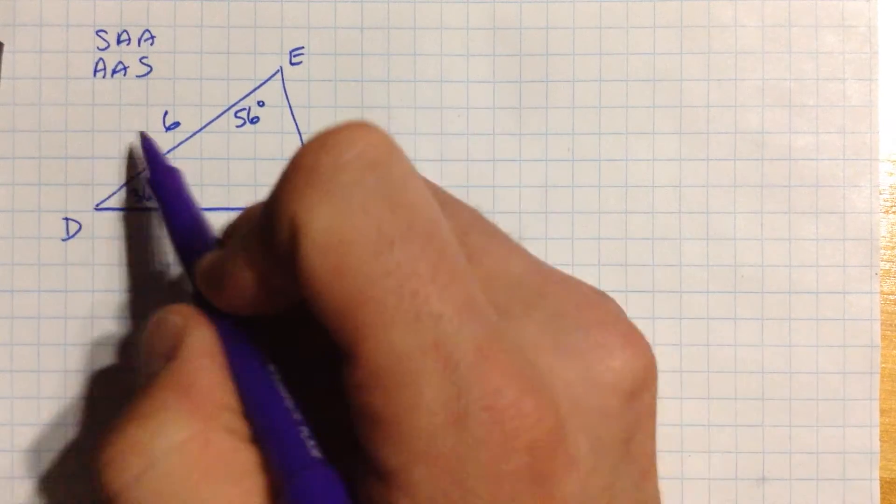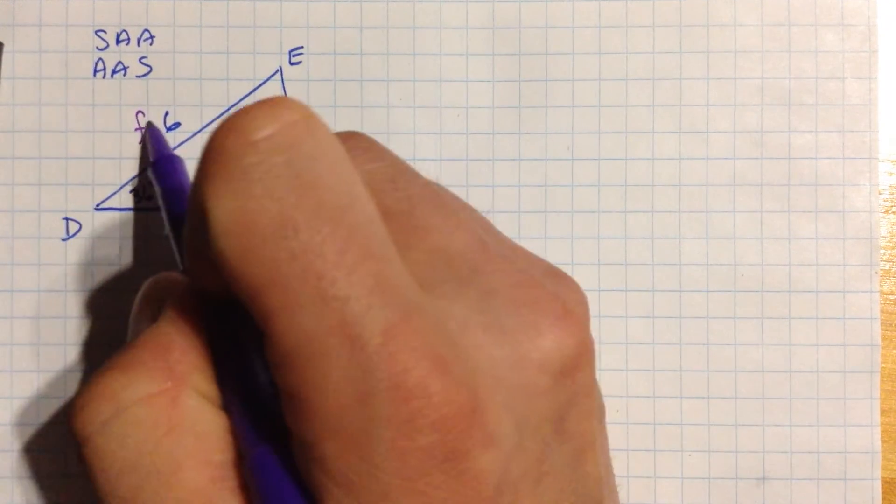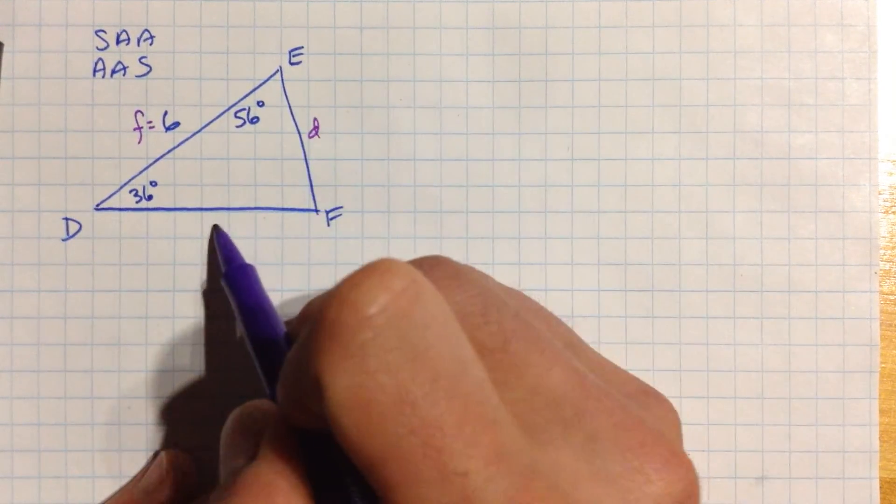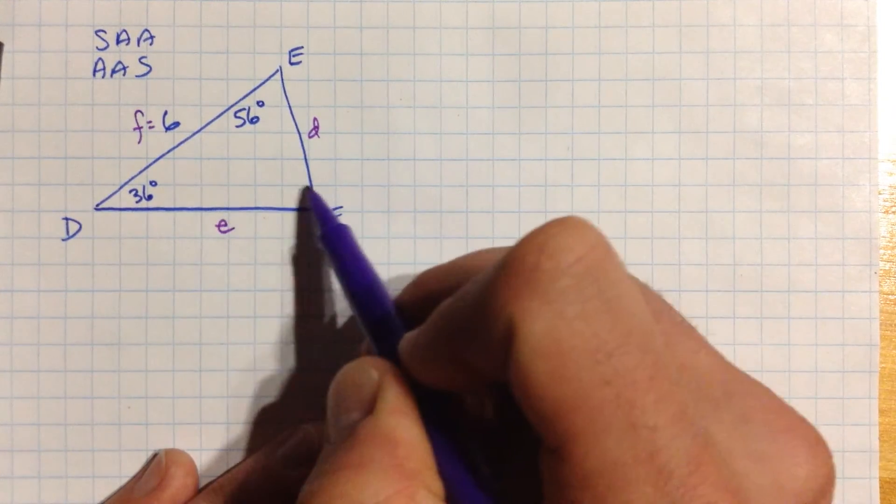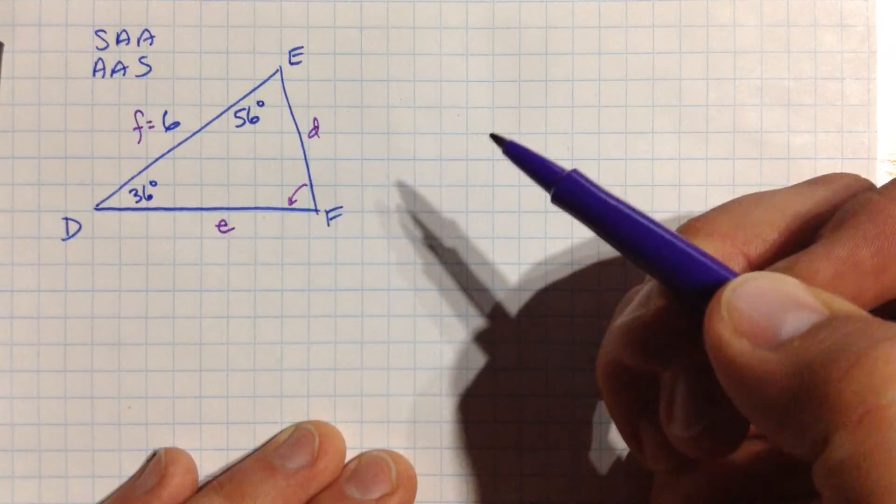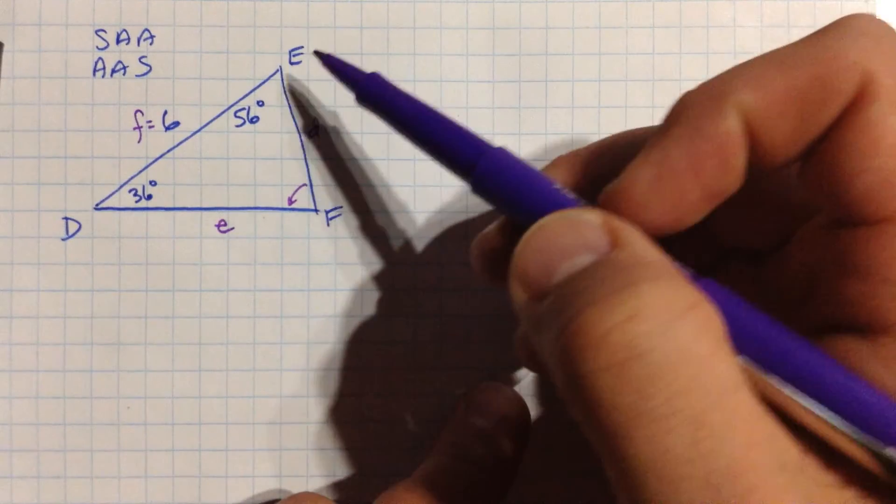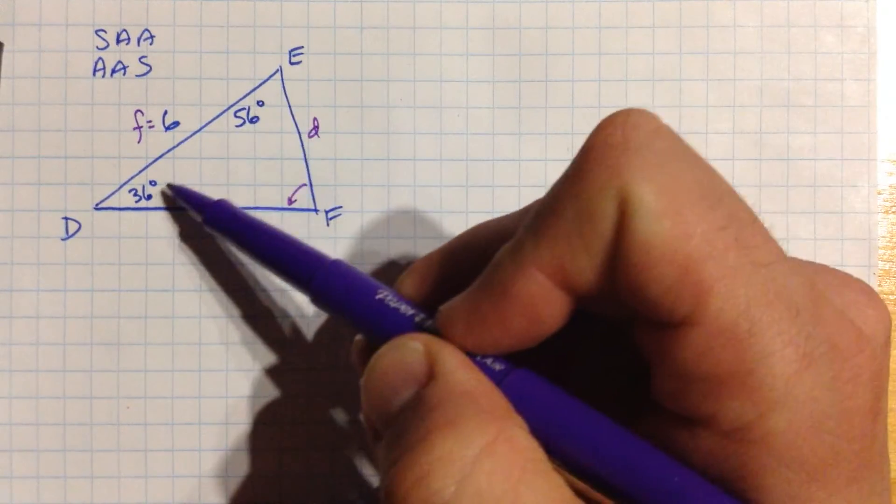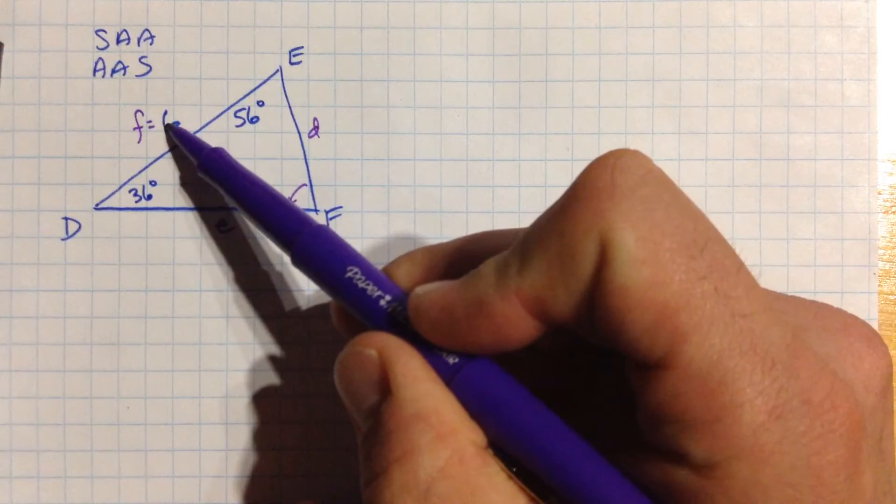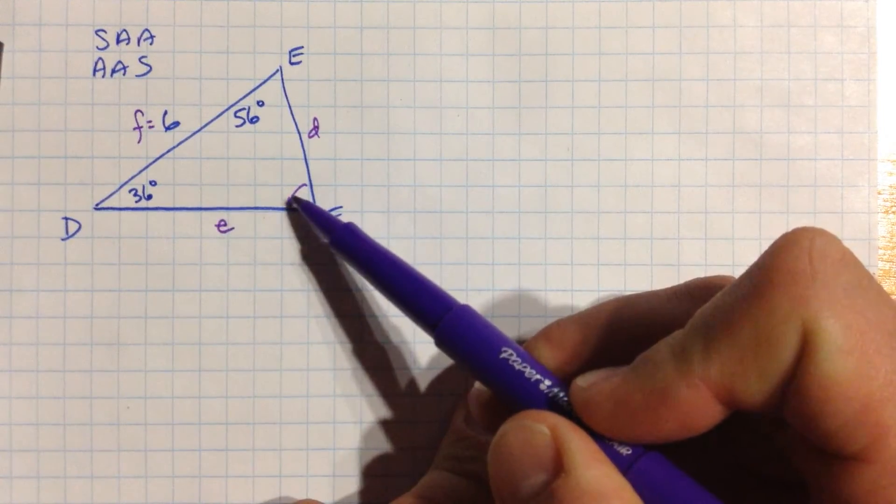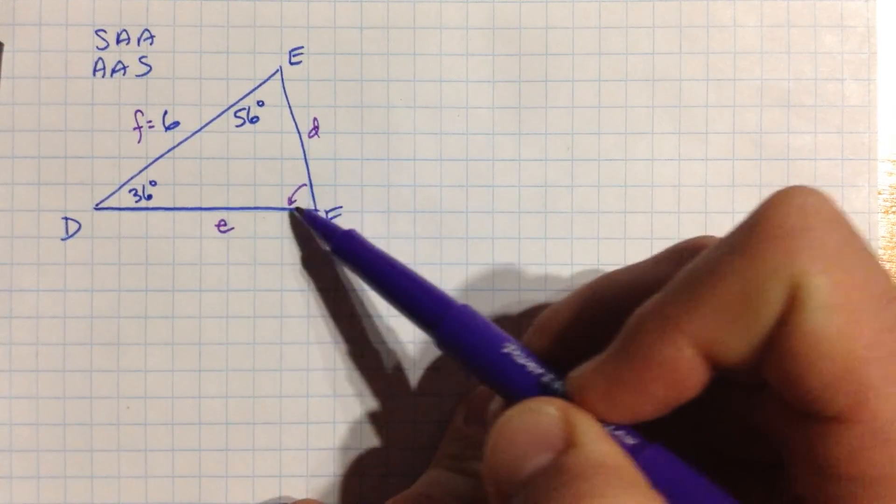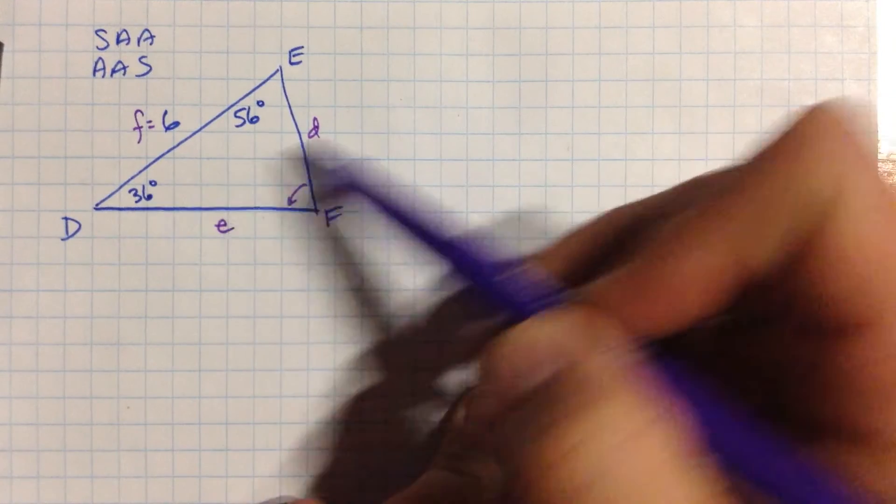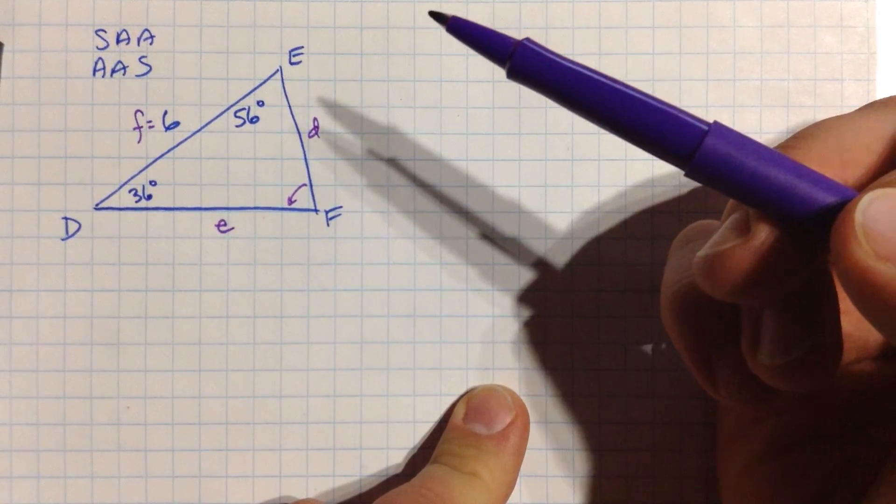So let's see what we know. This is little f. We don't know little d. We don't know little e. And we don't know big F over here. Well, let's see what we can figure out. I can't use the sine law yet, because this side is not opposite f. I don't know this angle f. I don't know e. I don't know d. I'm not really set up to use the sine law yet.